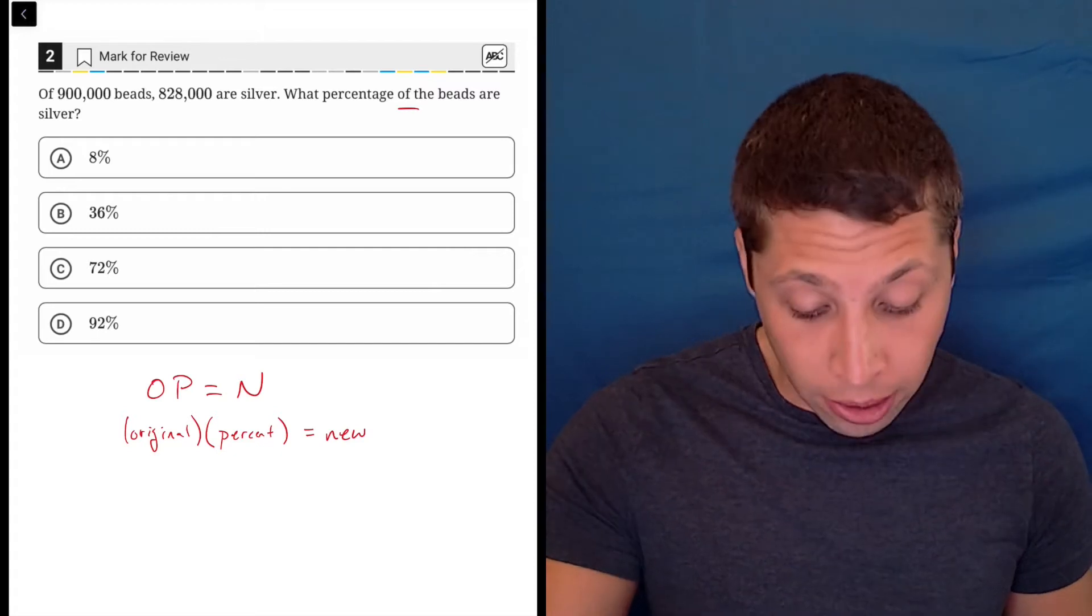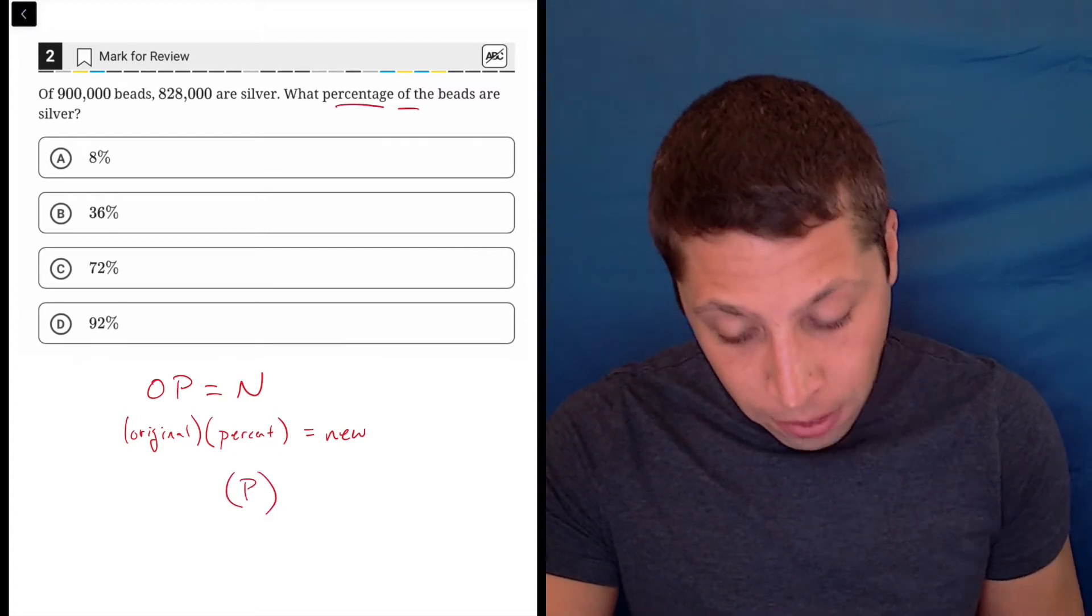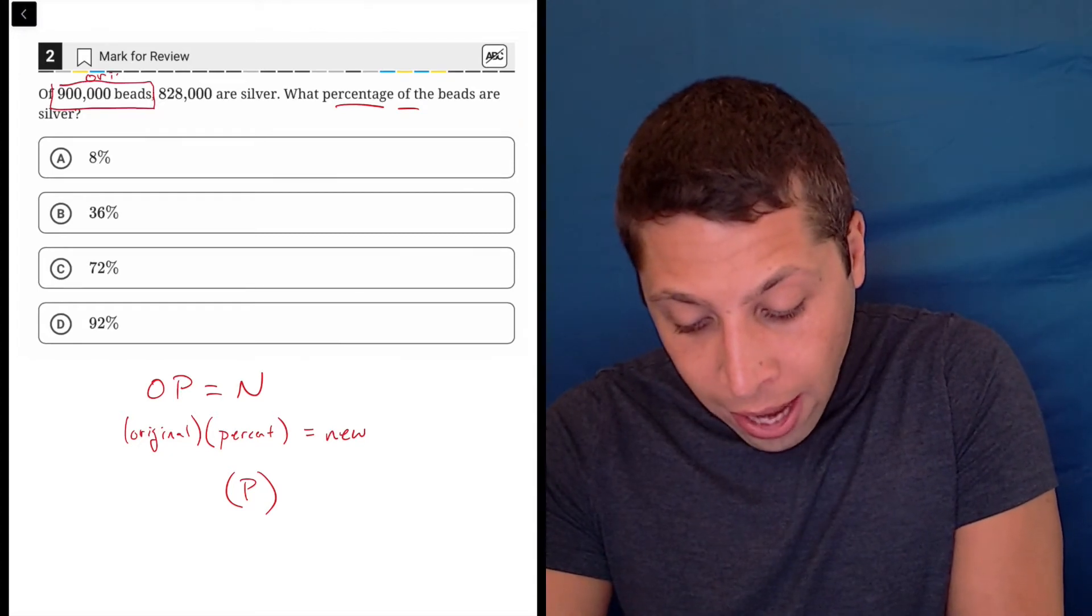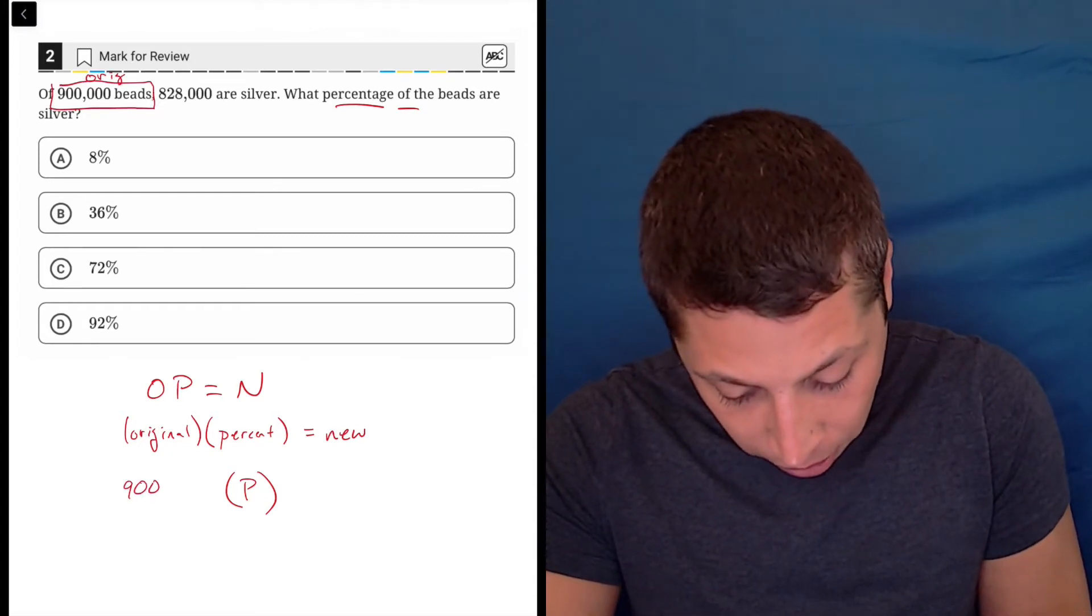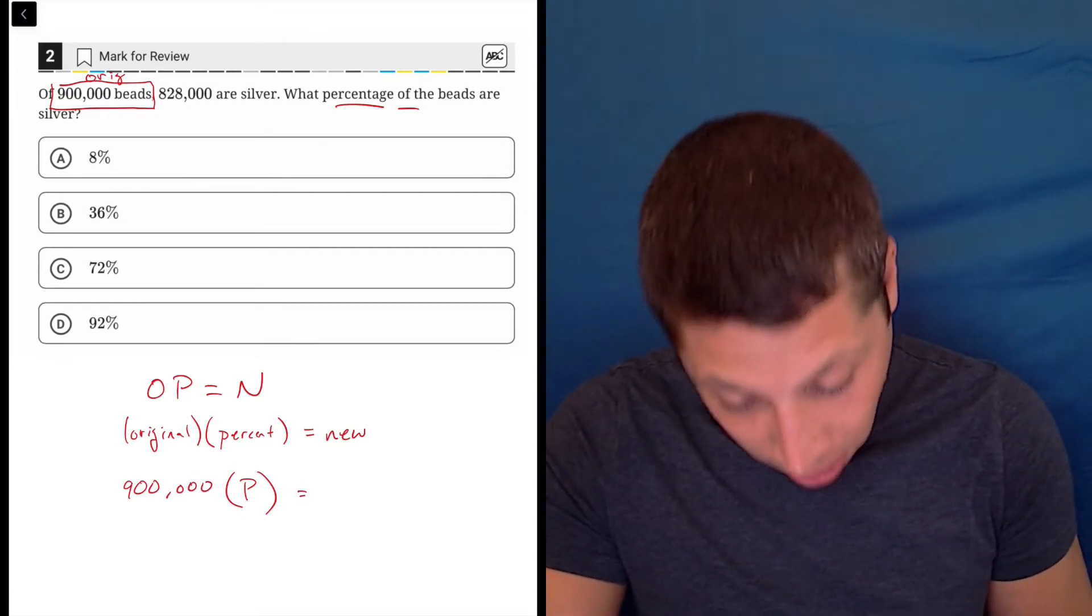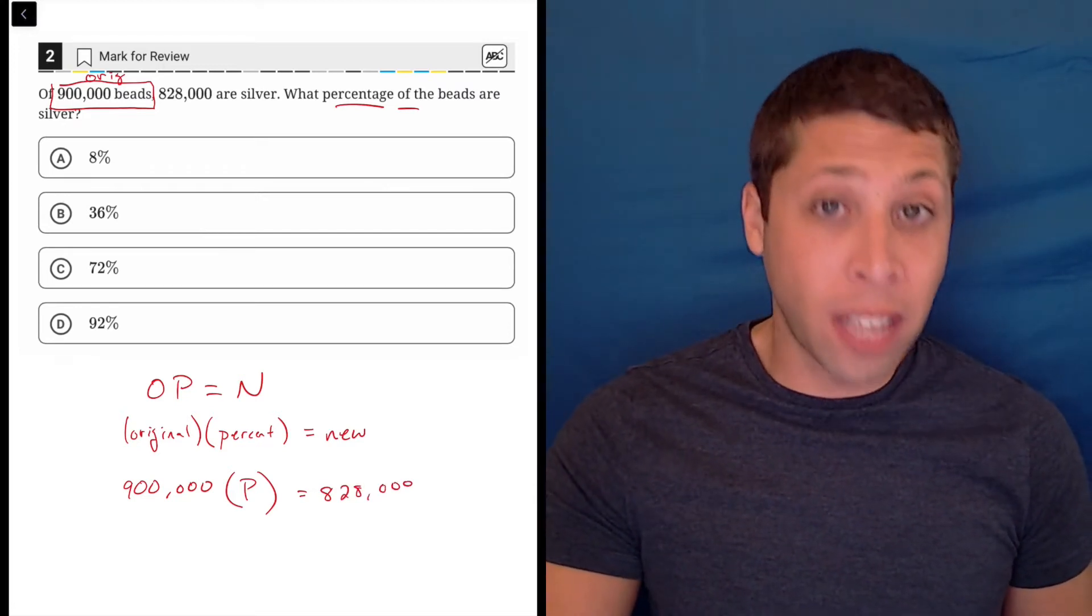So in this case, they're very clearly asking for the percentage, so P is going to remain a variable, but they give us that we originally have 900,000 beads, so I can put that as the original. And then the new number of beads, the silver ones, are 828,000, so that's our setup.